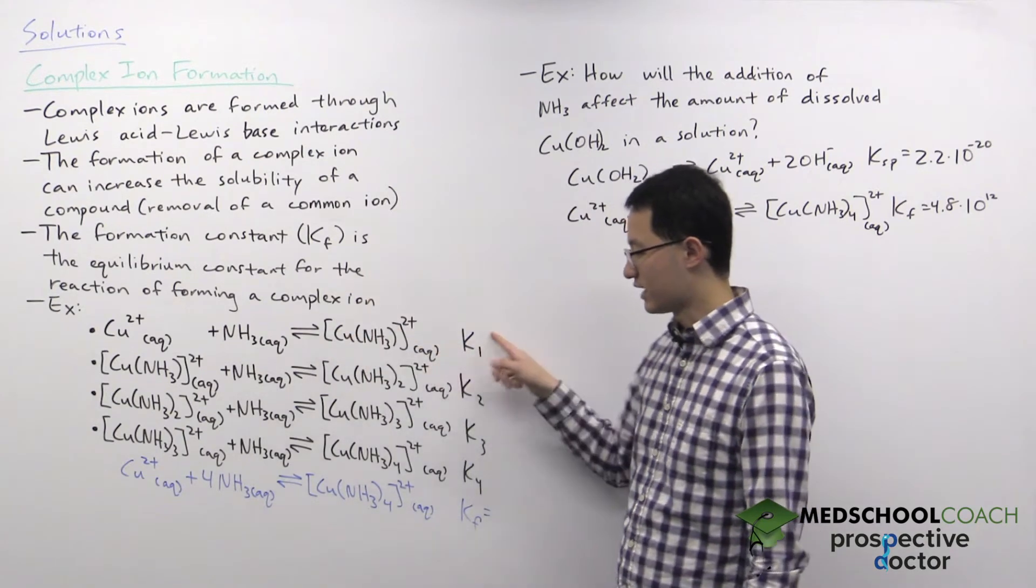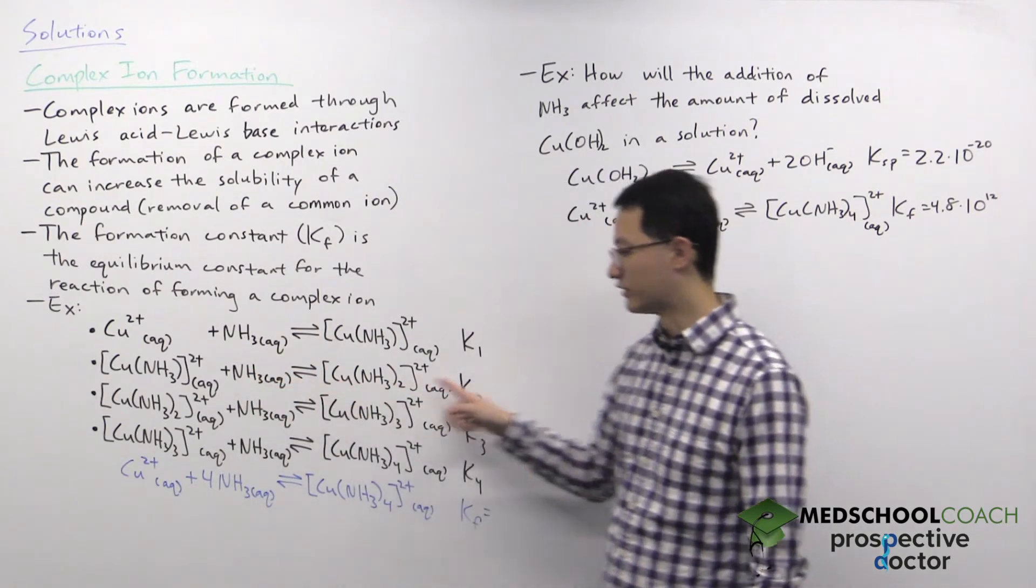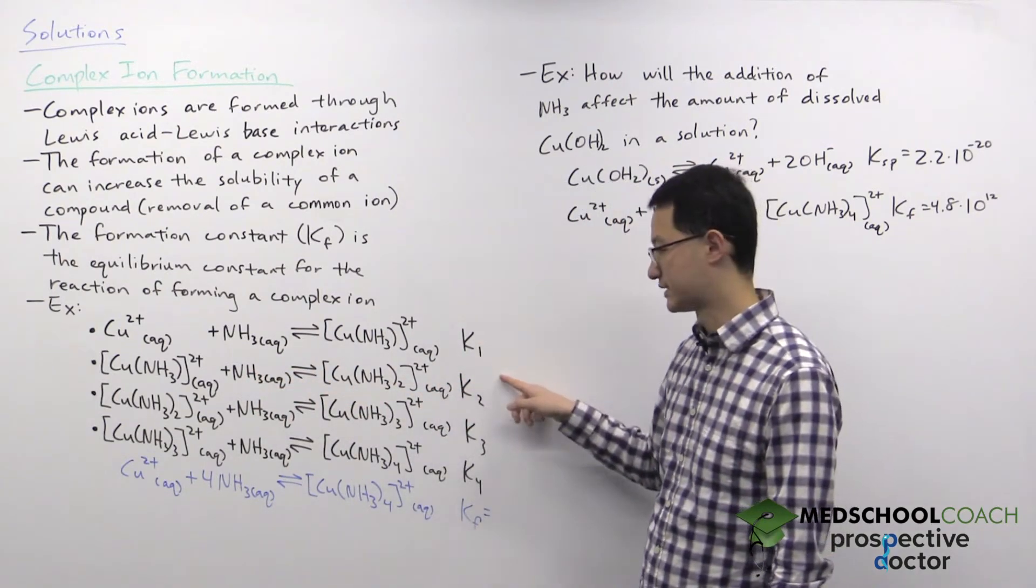This is the first step with equilibrium constant K1. This is the second step where it binds a second ammonia molecule with equilibrium constant K2.